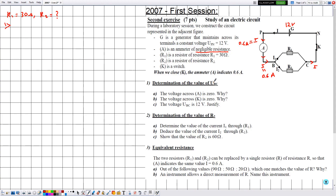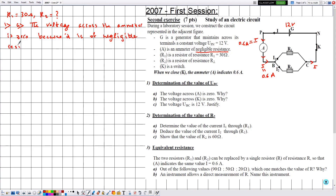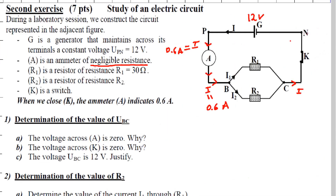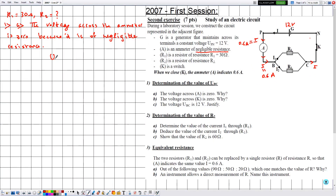Number one: determination of the value of UBC, which is the voltage across resistors R1 and R2. In part a, the voltage across the ammeter A is zero, because the ammeter is of negligible resistance. So the voltage across the ammeter, named UPB, equals zero.